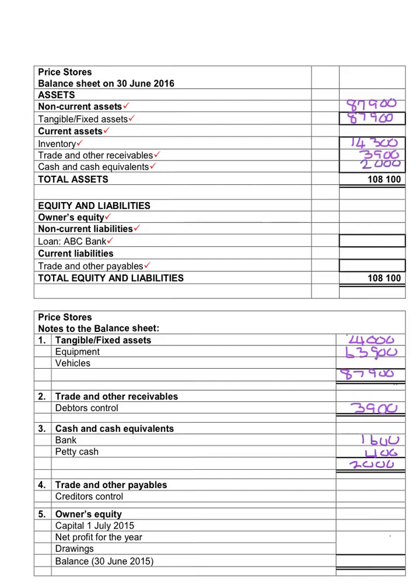We will then add the total current assets together to see what our total amount is, and that will give us $20,200. The purpose of the notes is that where we add more than one figure, we show it in the note so we can show where we got the information recorded in the balance sheet. My first note for fixed assets or tangible assets will be note number one, and trade and other receivables will be note number two.